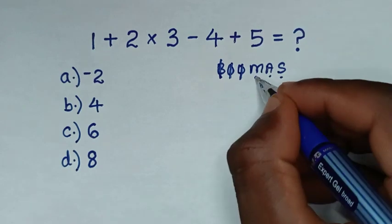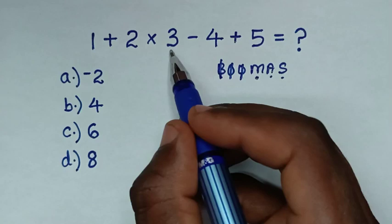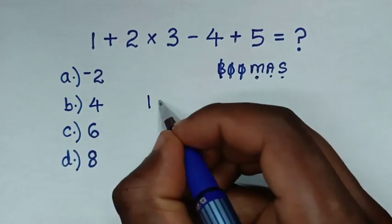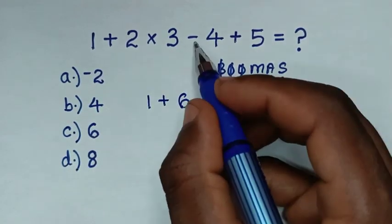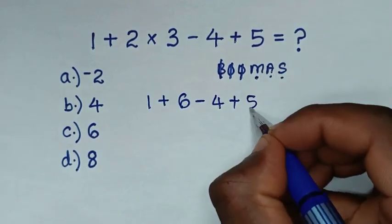So we start to deal with this multiplication first of 2 times 3 which is 6. So it will be 1, then plus 6, then minus 4, then plus this 5.